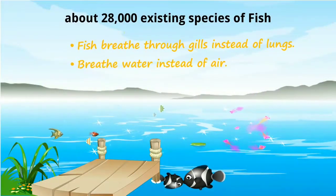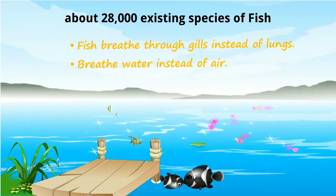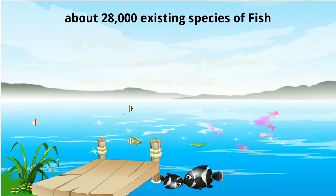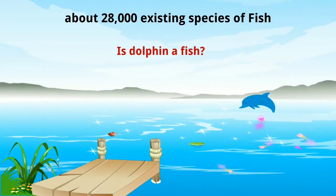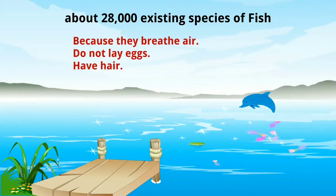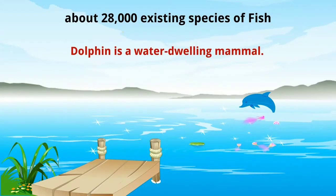Fish breathe through gills instead of lungs — they breathe water instead of air. They lay eggs and live in water their whole lives. Fish have fins instead of limbs. The question is: is a dolphin a fish? Many people think dolphins are fish, but they are not, because they breathe air, do not lay eggs, and have hair. A dolphin is a mammal that lives in water.